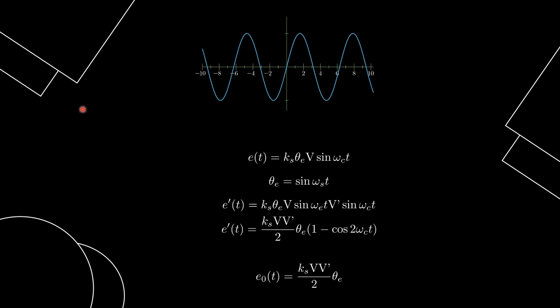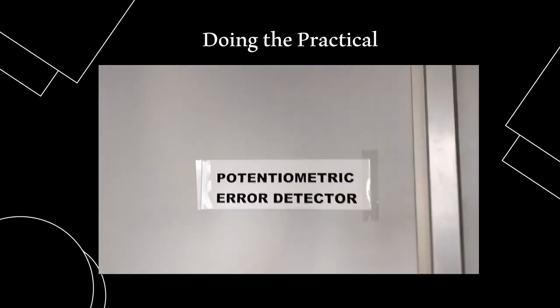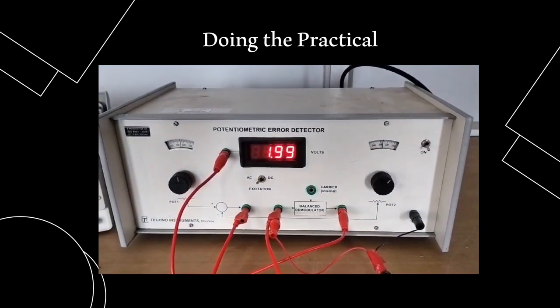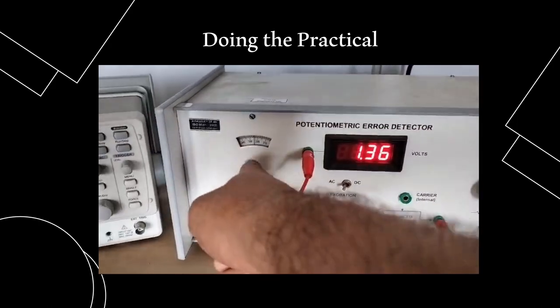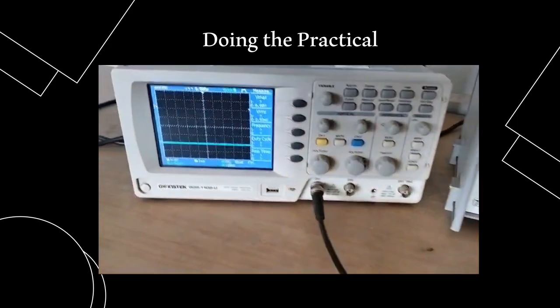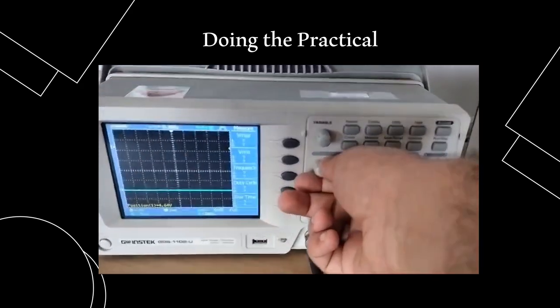Which can then be fed to CRO and after demodulation can show constant value on the kit display. So this is me doing the practical in our lab. This is the kit. You can see rotating the knob changes the display voltage. Currently the kit is in the DC mode and connections were not made to CRO. Hence no waveform.